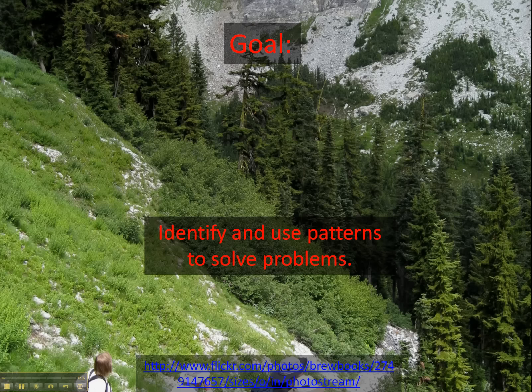We're going to start pulling together all the information that we've learned over the last five lessons. This problem involves hikers on a trail, and we want to know where they're going to meet up in the middle. You're going to use a table of values, and you're going to identify patterns in that table of values.